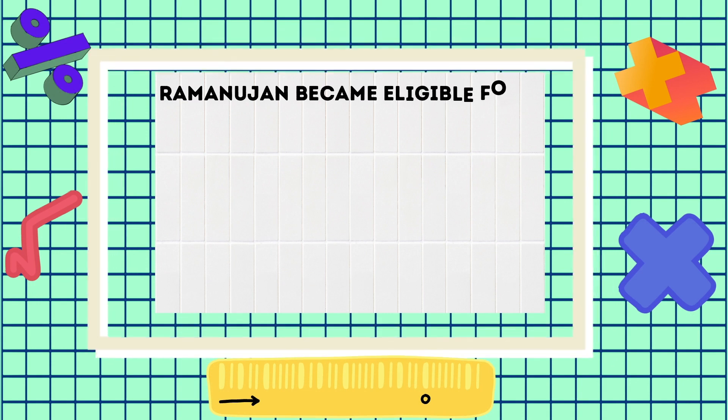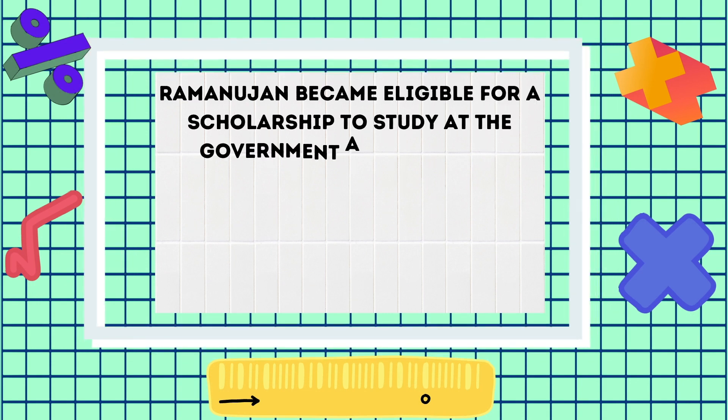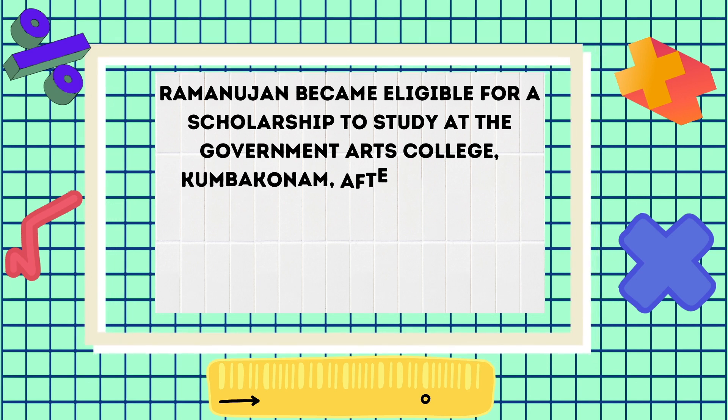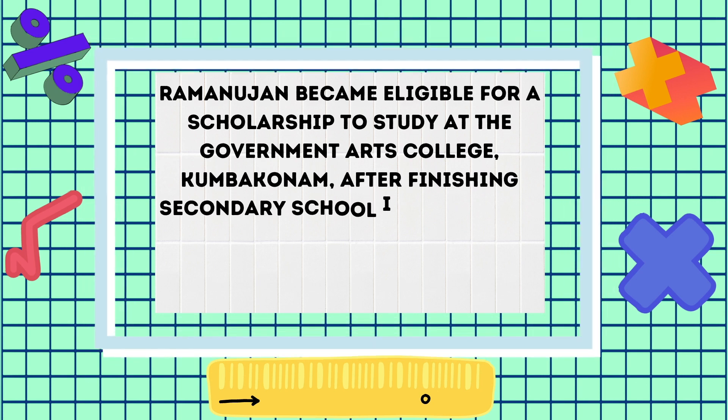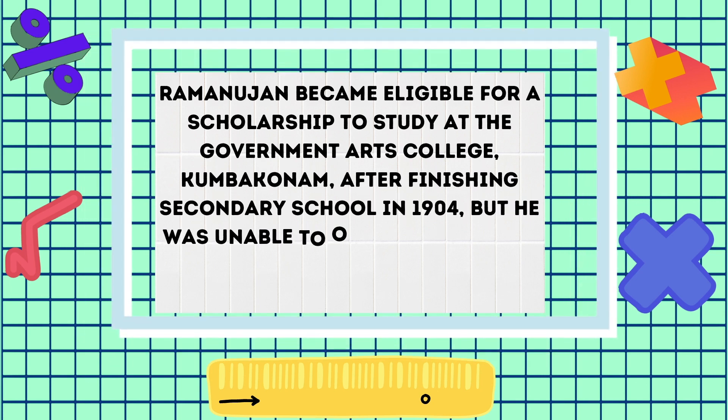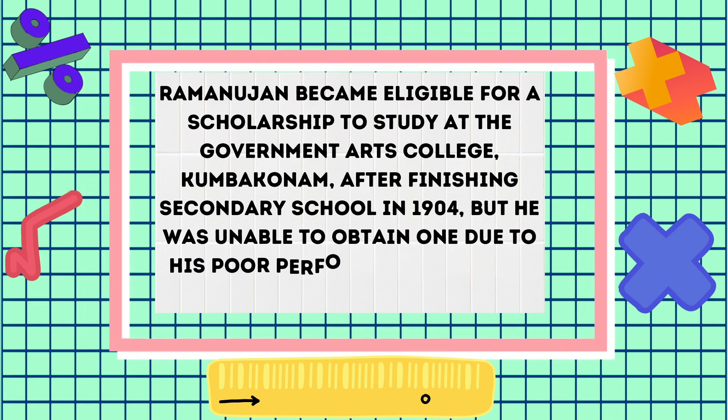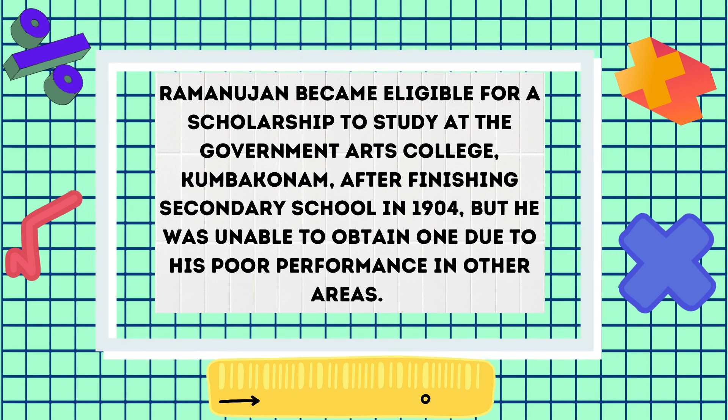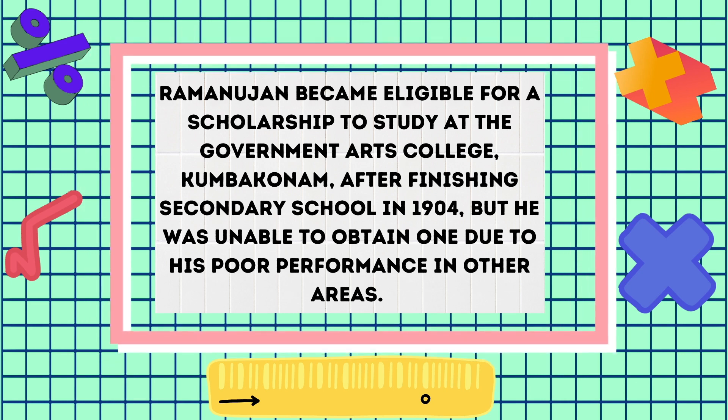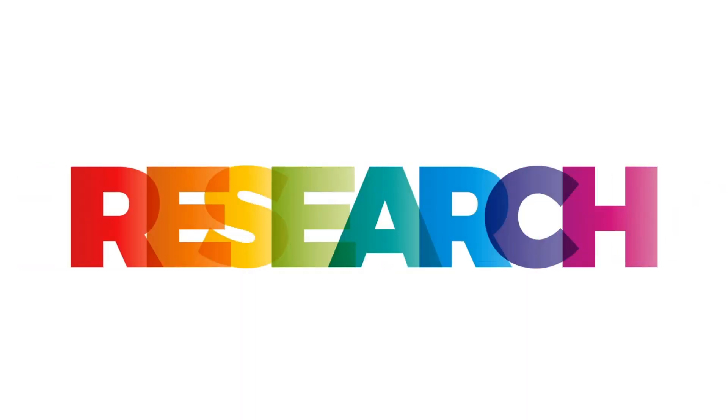Ramanujan became eligible for scholarship to study at the government's art college after finishing secondary school in 1904, but he was unable to obtain one due to his poor performance in other areas. Living in dire poverty, Ramanujan then pursued independent research in mathematics.